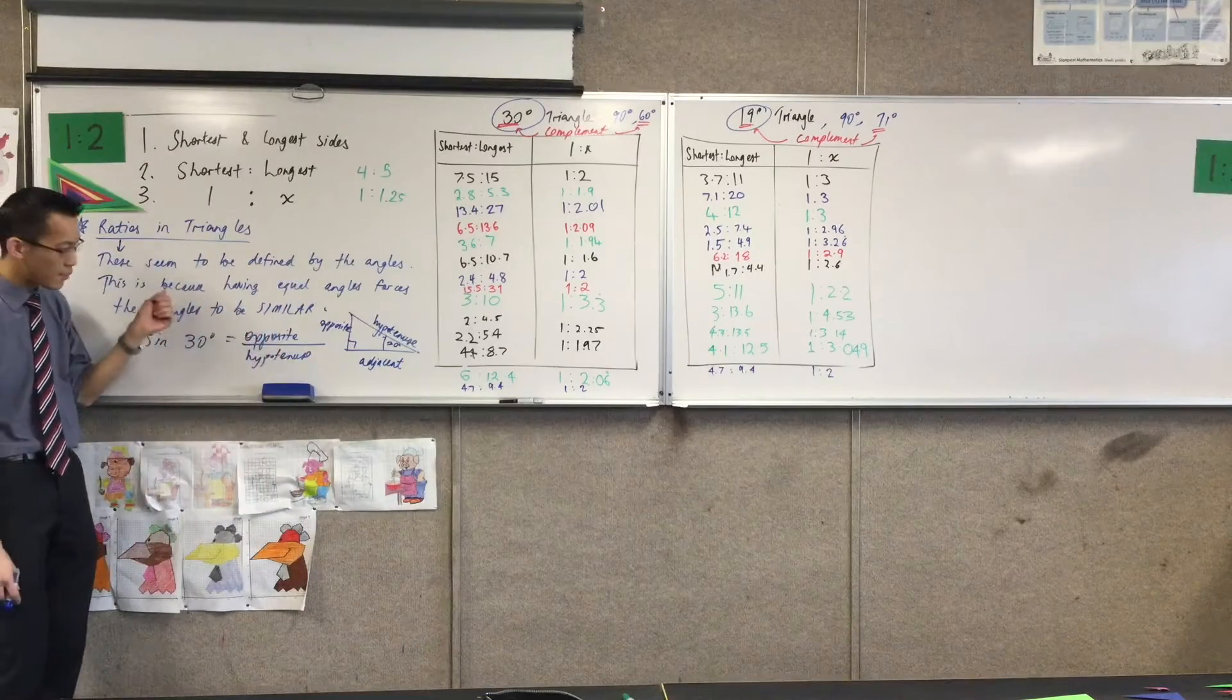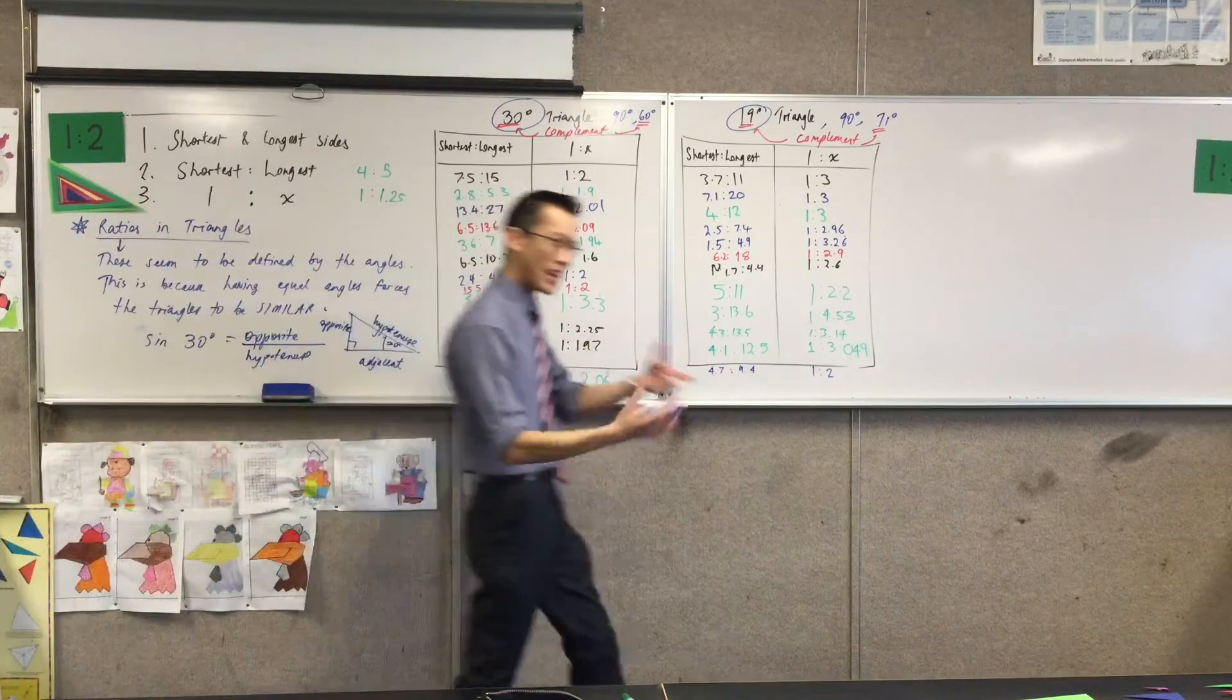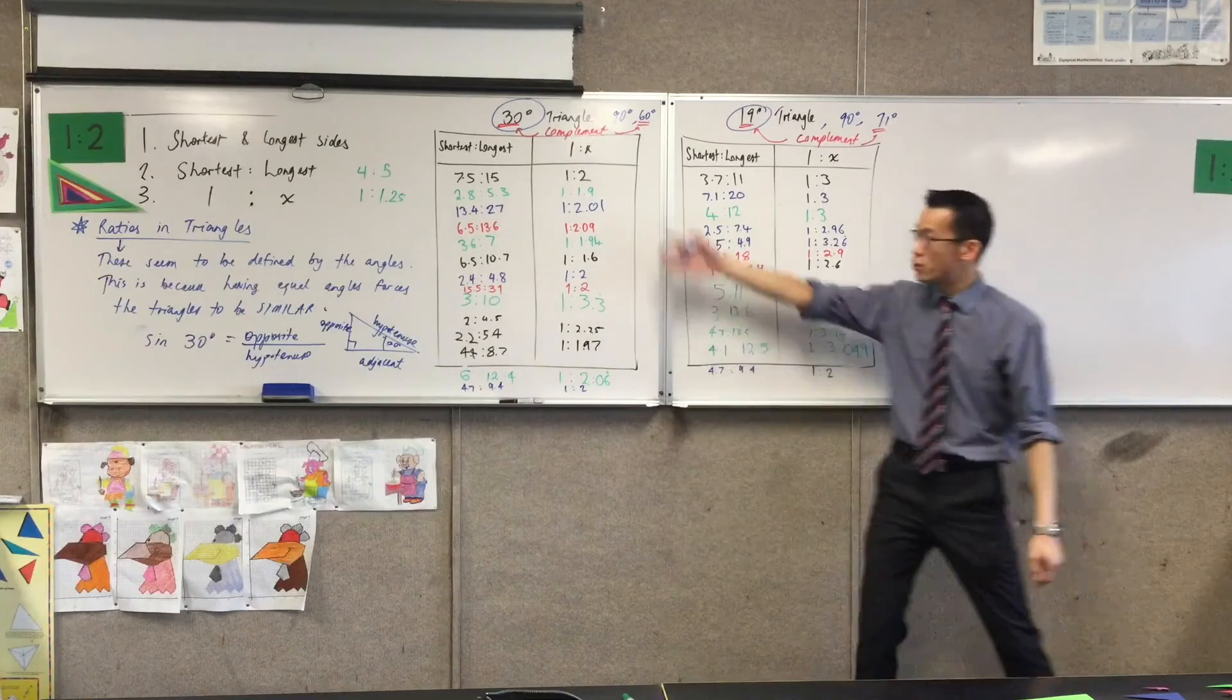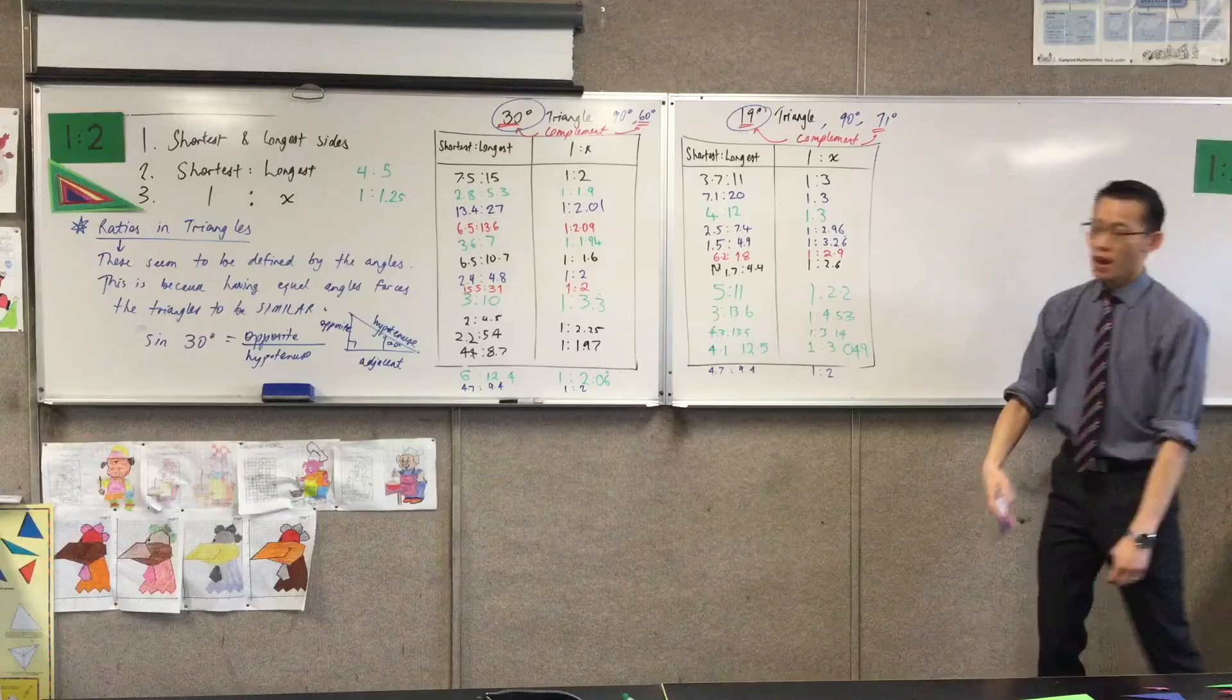So, sine is giving me the ratio of these two sides, right? But I can talk about the other ratios of sides, and they should do the same thing, they should have the same pattern. You can measure these out again if you're really interested.